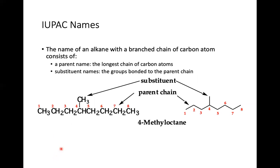For the IUPAC name of an alkane with a branched chain: the parent name is the longest chain of carbon atoms, and the substituent name is the group bonded to the parent chain. For example, if you write it in line angle form, the parent chain is octane, and there is a methyl group at carbon 4, so it is called 4-methyloctane.